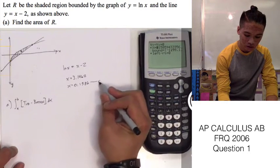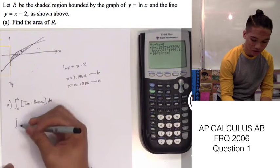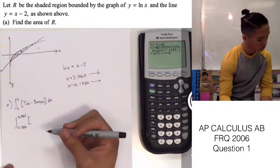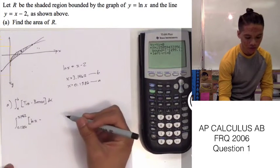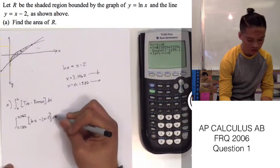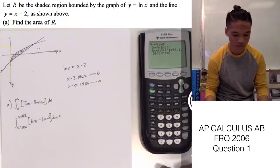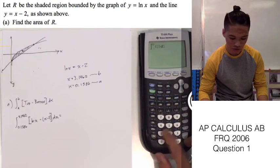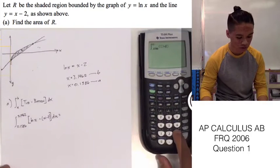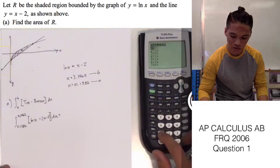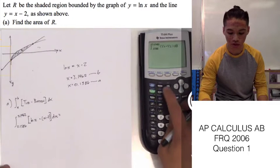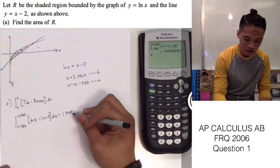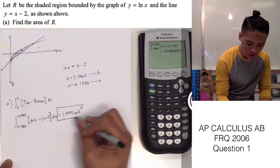Now we have our a and our b, so we can plug those in: the integral from 0.1586 to 3.1462 of our top function ln of x minus our bottom function x minus 2, dx. Using our calculator — Math 9 — from lower limit 0.1586 to upper limit 3.1462 of Y1 minus Y2 with respect to x. The result is 1.949 units squared, which is our area of R.